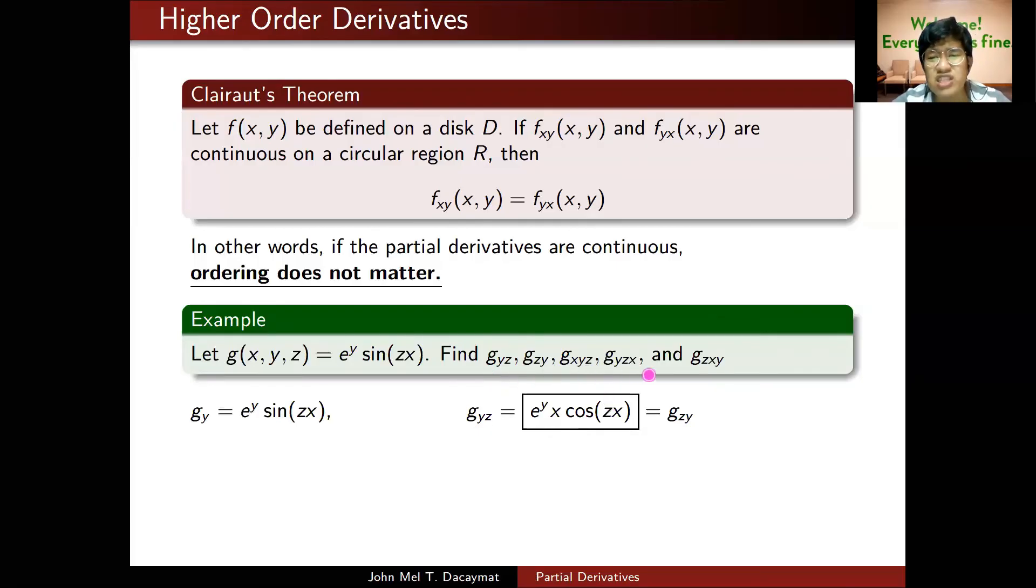For these three, they're third order: g sub xyz, g sub yzx, and g sub zxy. But they're just the same thing—the x, y, z are just shuffled. So I just need to get one of those. I'll choose g sub yzx because I already got g sub yz here. So I'll just take the partial with respect to x and I'm done.